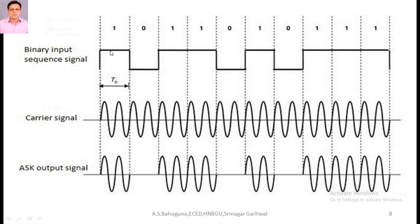In ASK — amplitude shift keying — we have a binary input sequence as digital input data and a sinusoidal carrier signal. In ASK, the carrier is switched on and off with respect to the input signal. When the input is at maximum, the carrier is present; when the input is zero, the carrier is absent. This on-off switching behavior is why ASK is also called on-off keying (OOK).